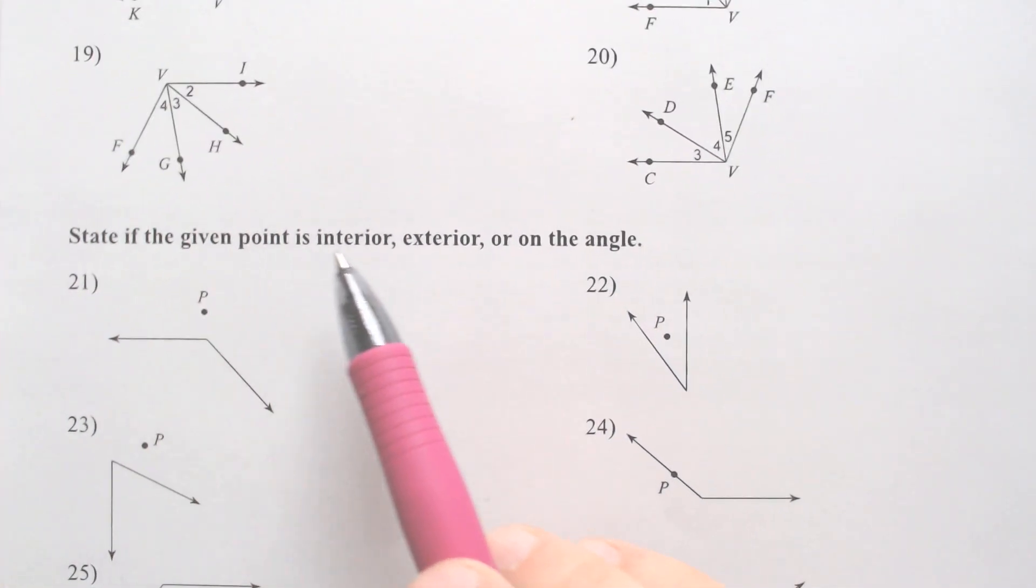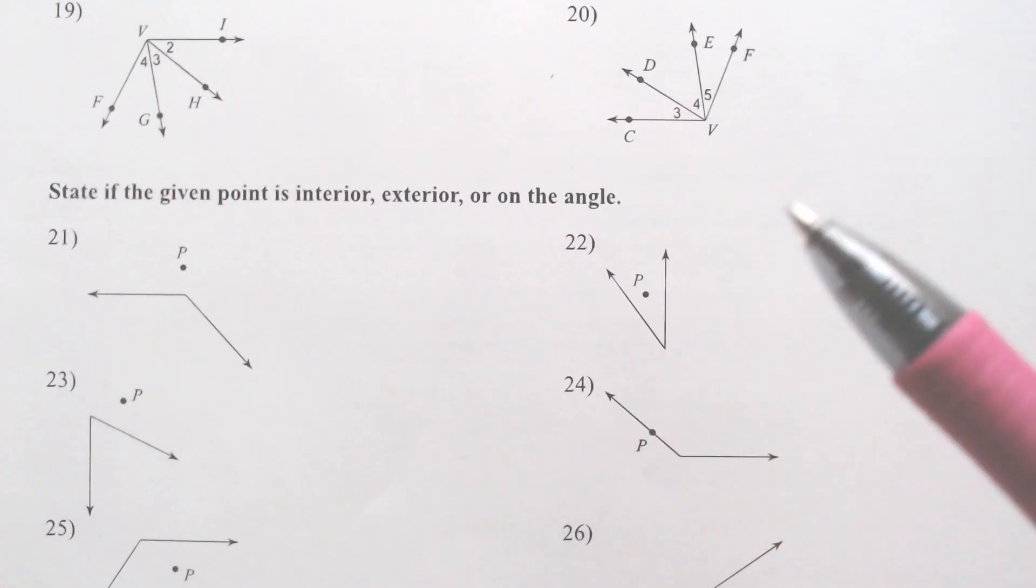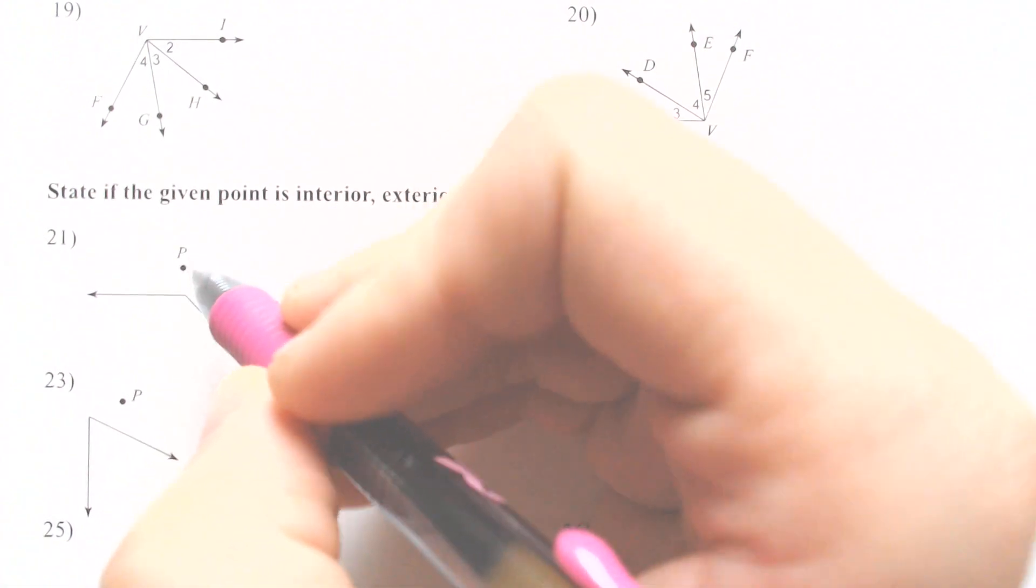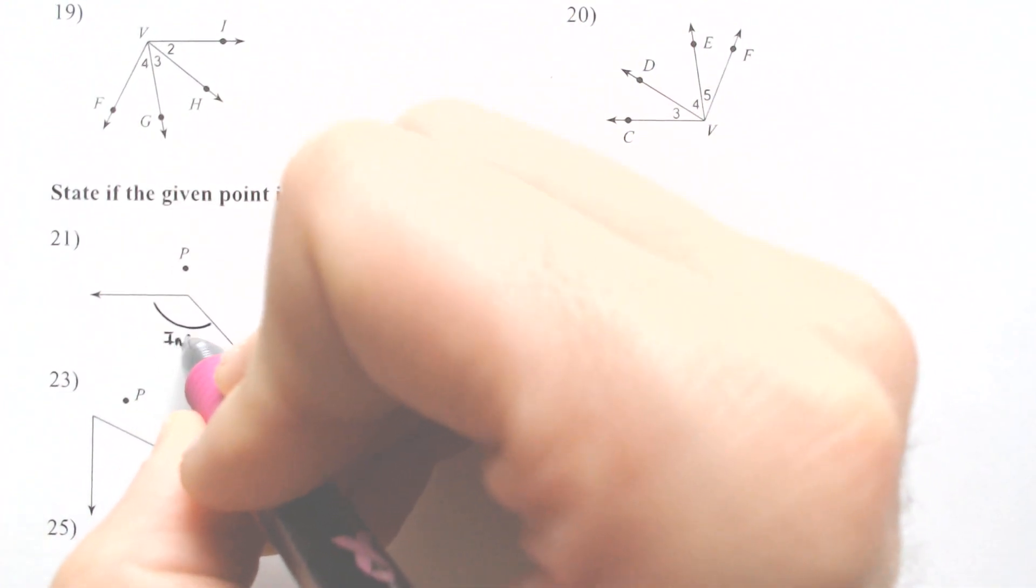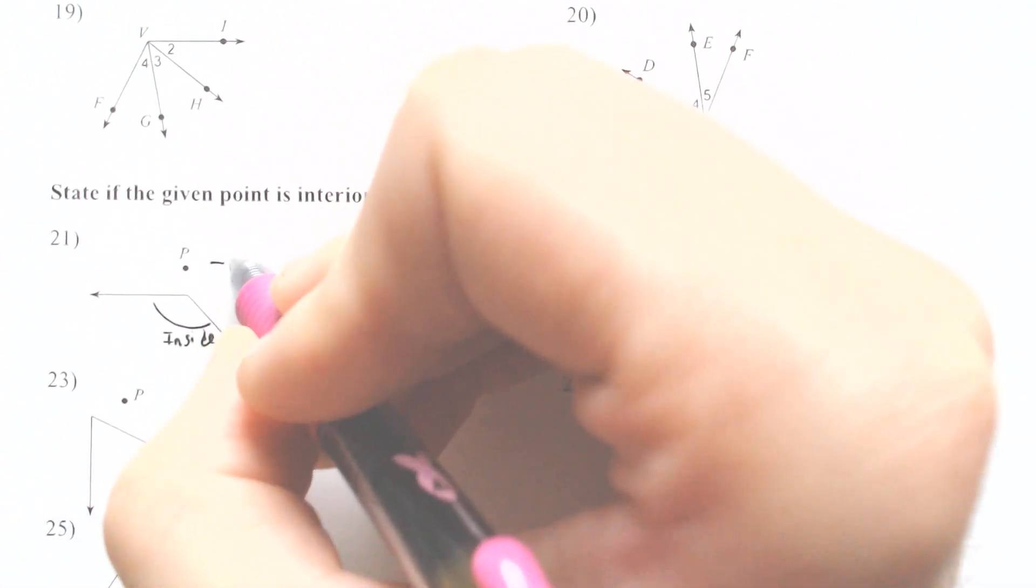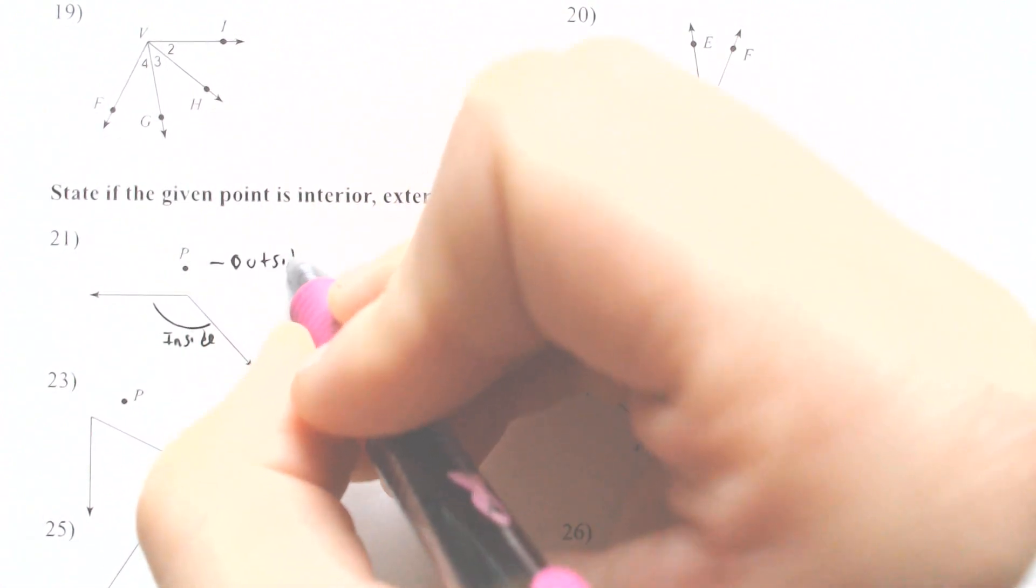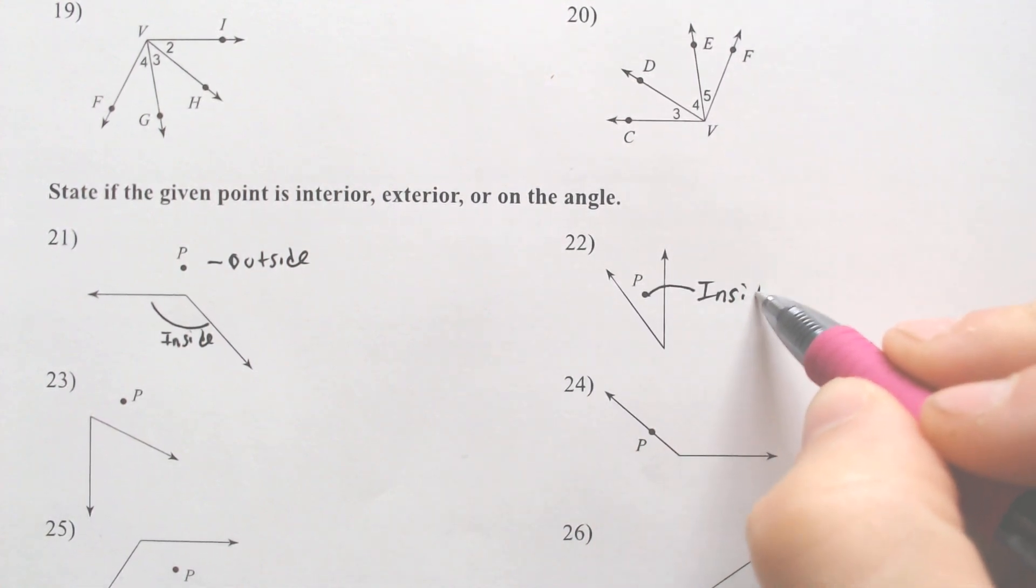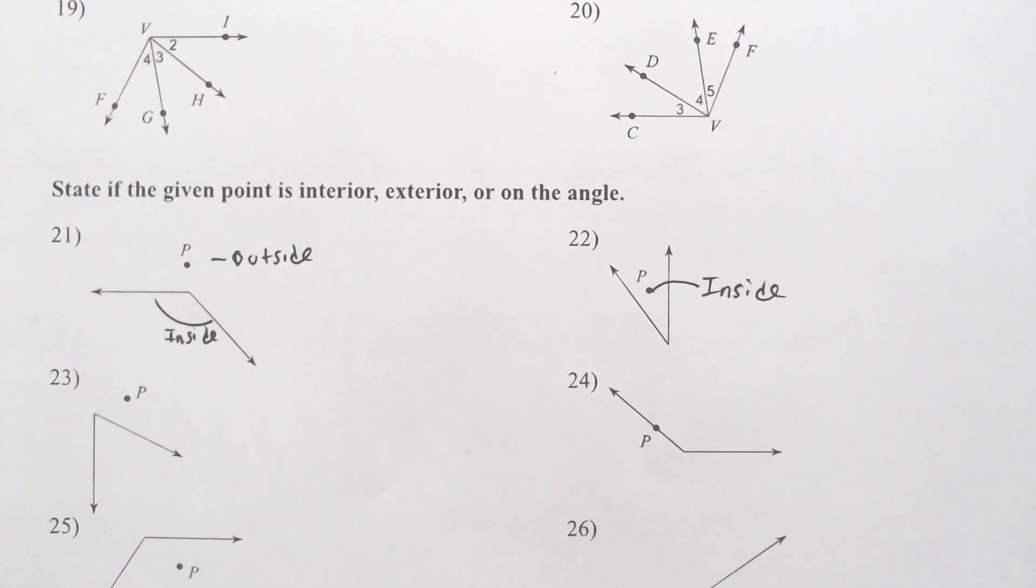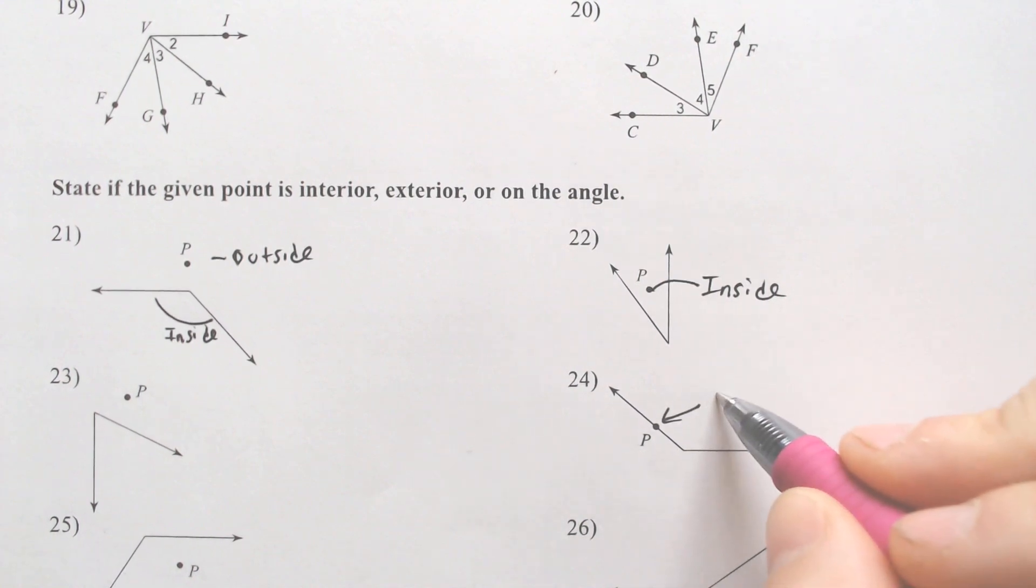Quick thing at the very end. It says state whether each point is interior, exterior, or on the angle. Well, B P is outside of the angle. This part right here, this would be considered the inside of the angle. So this would be considered the outside. Versus here, this would be considered the inside of the angle. And versus here, this would be considered on the angle. So that's just kind of a weird skill there here.